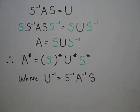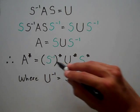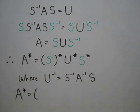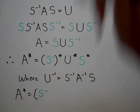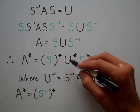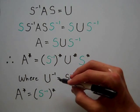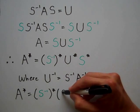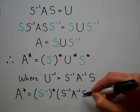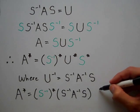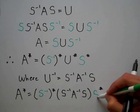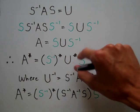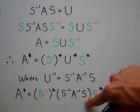Based on that, I'm going to rewrite this equation. A star is equal to S inverse star times — instead of writing U star, I'm going to replace that with what I just obtained for U inverse, which is S inverse times A inverse times S — times S star. U star is equivalent to U inverse, so I just replaced U star with S inverse A inverse times S.